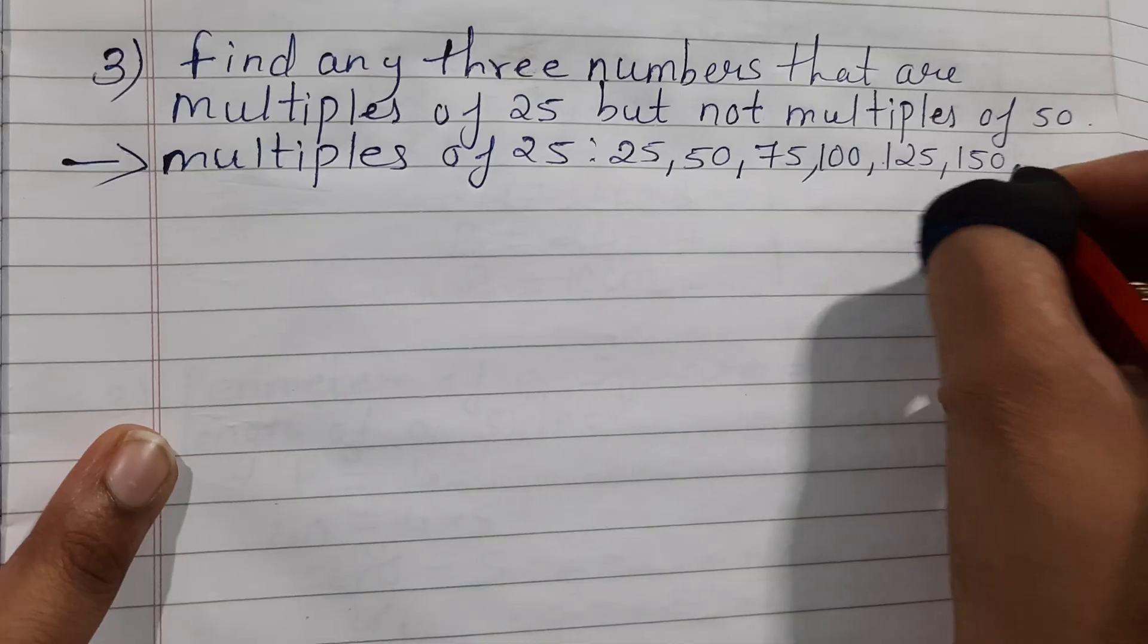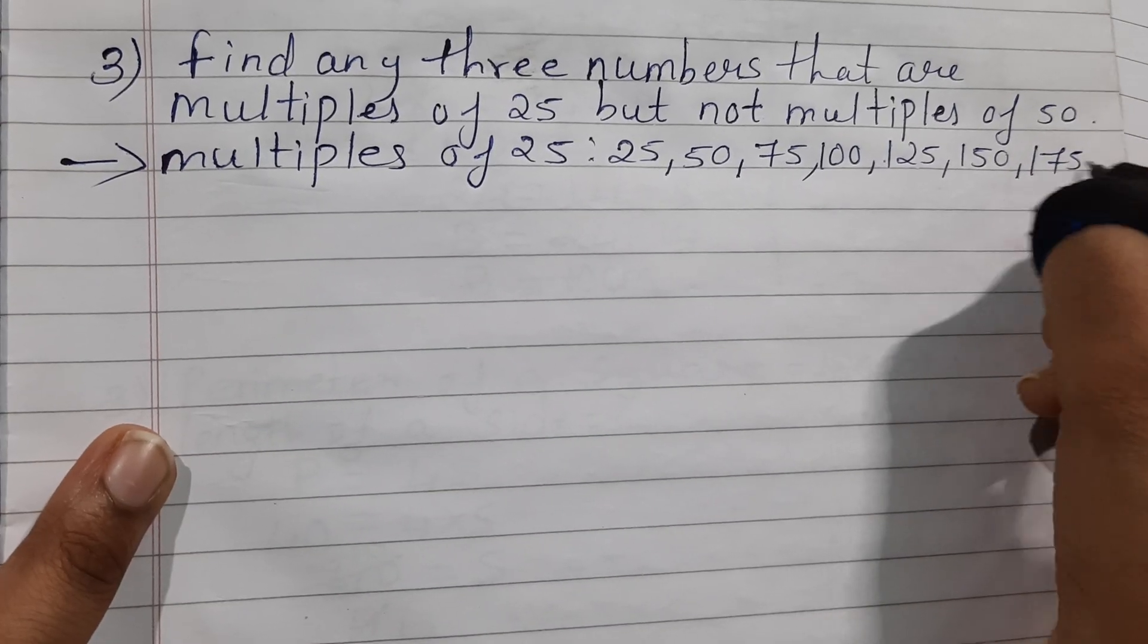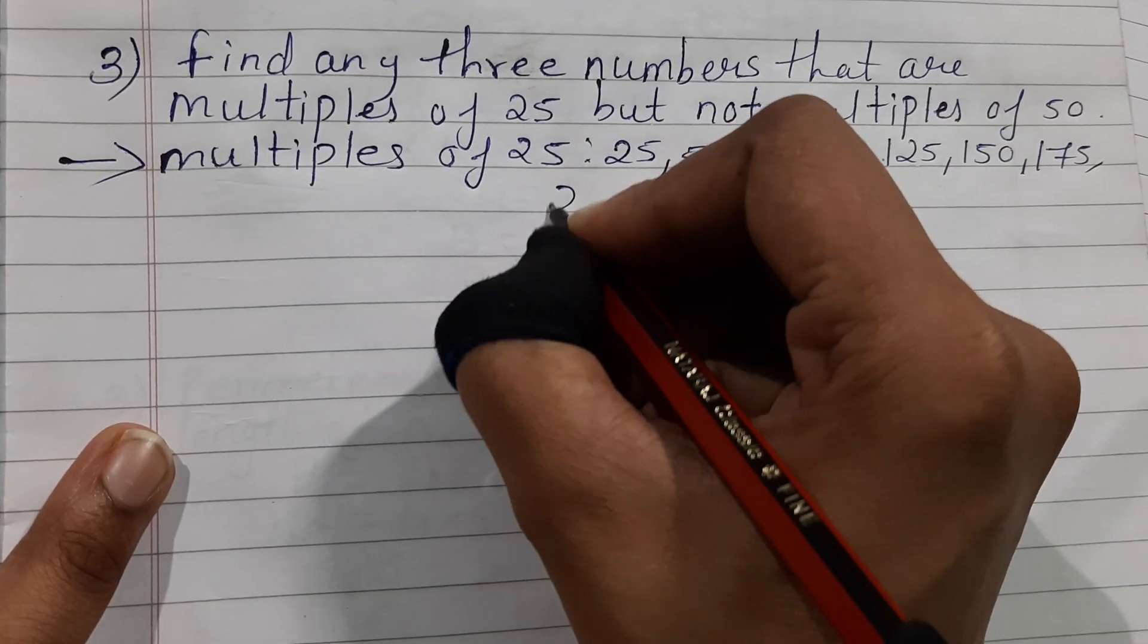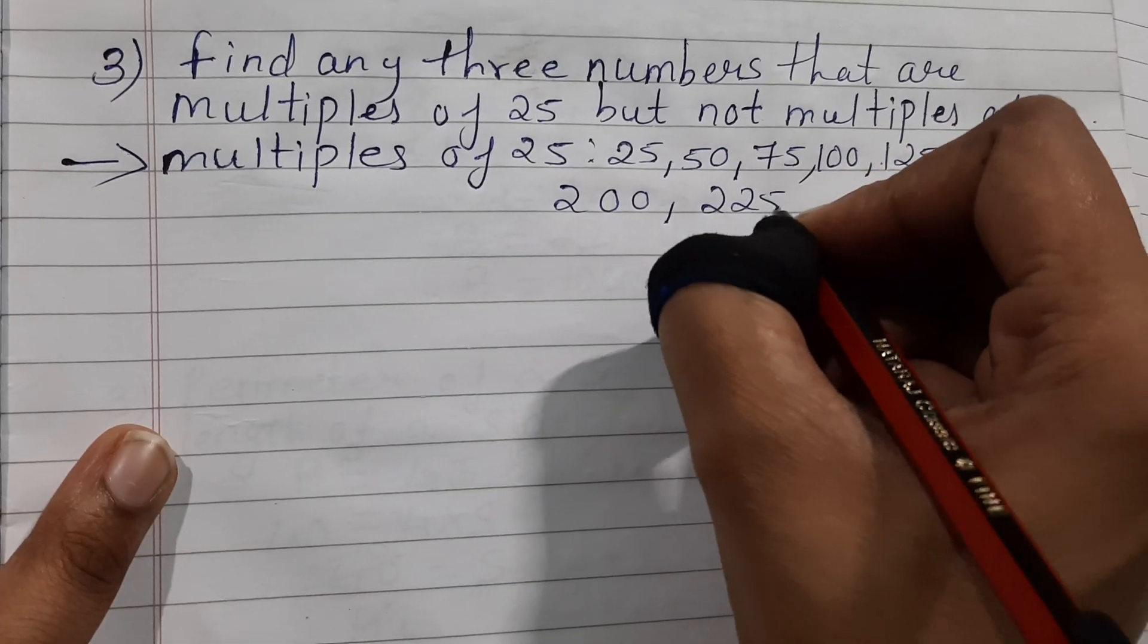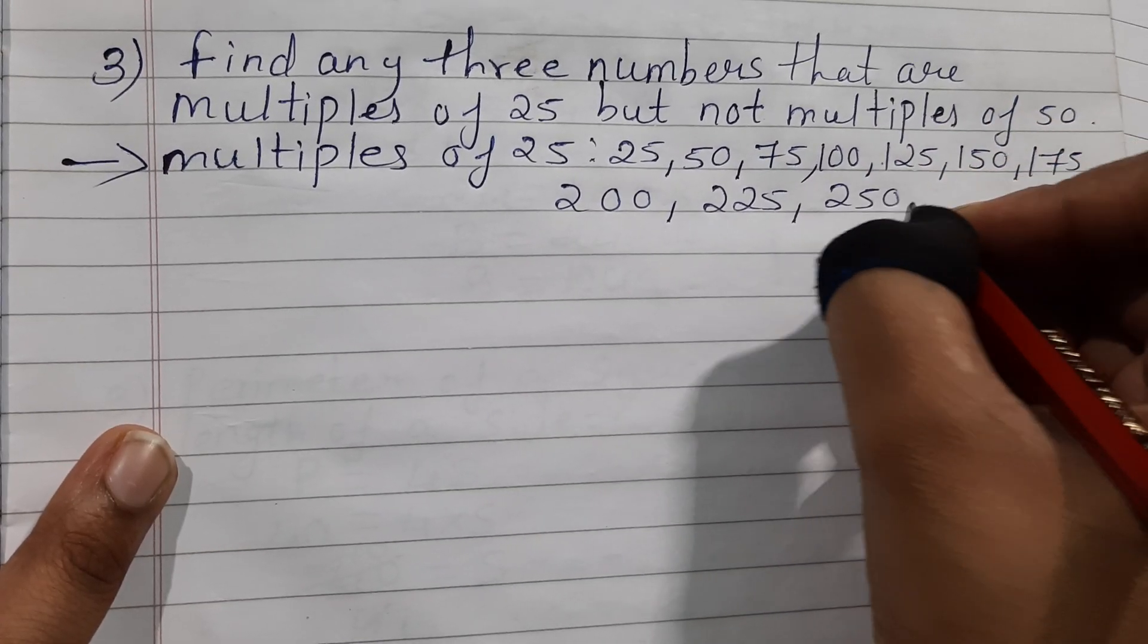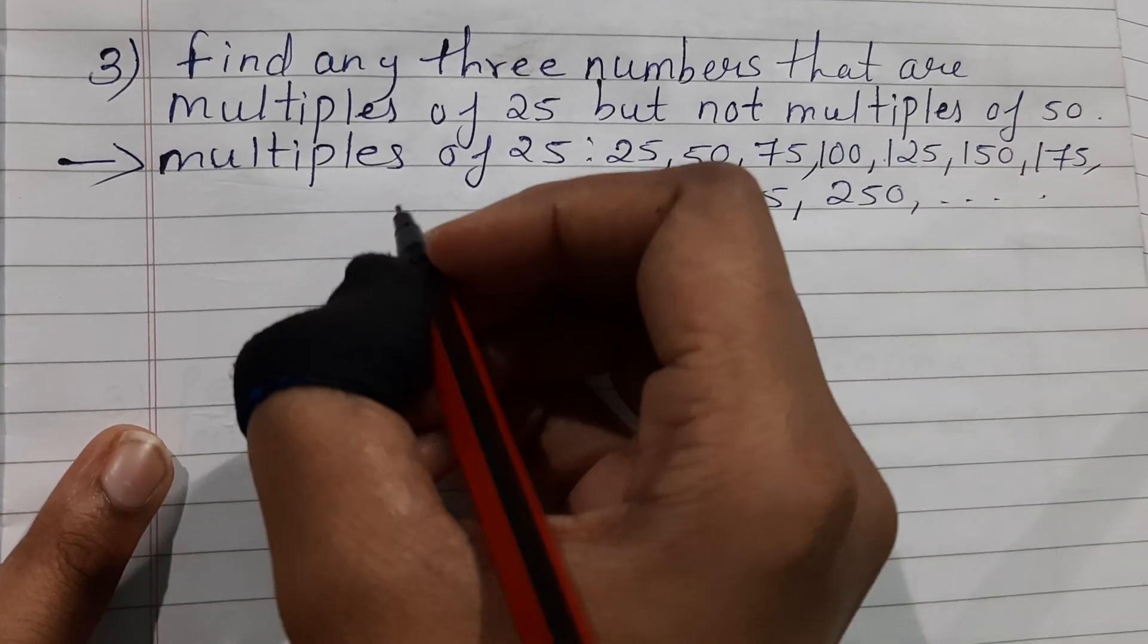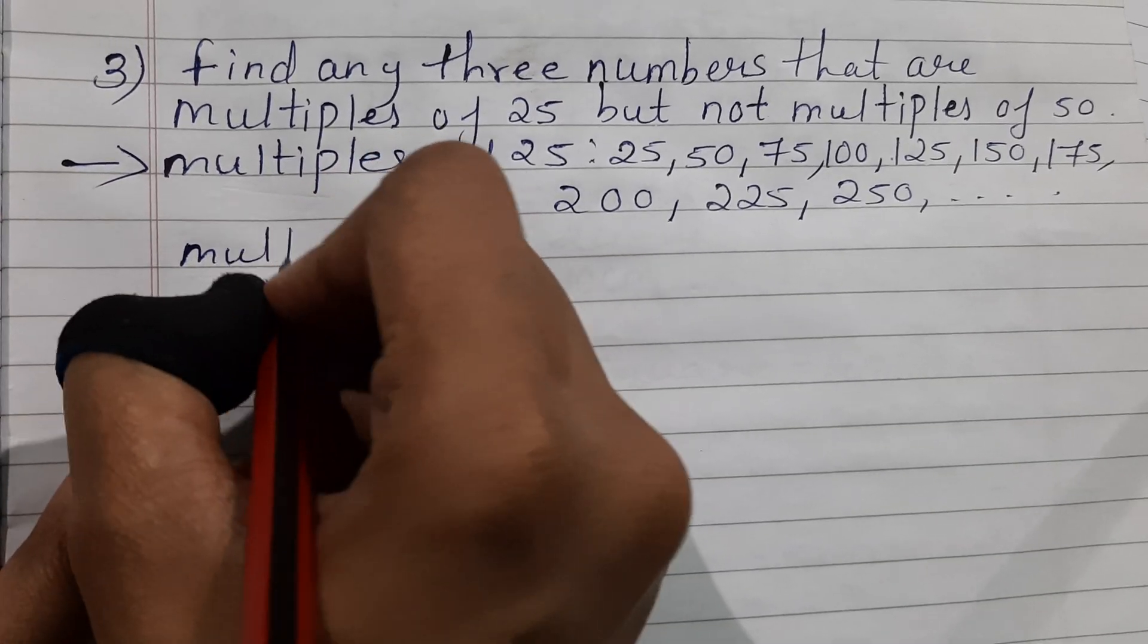Then 150, 175, then 200, then 225, then 250 and so on. Next we will be writing down the multiples of 50.